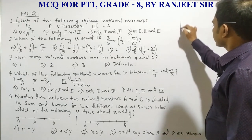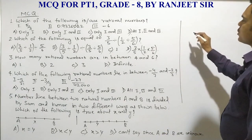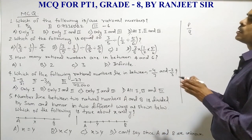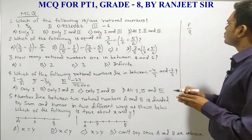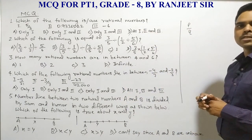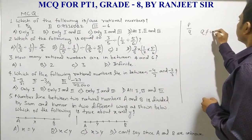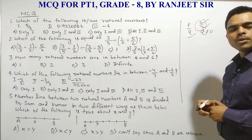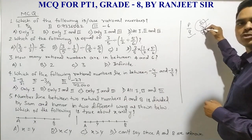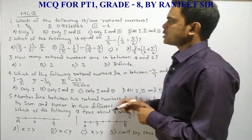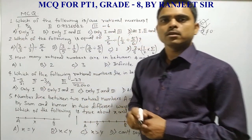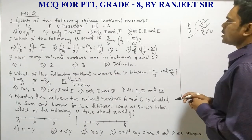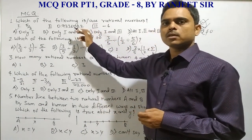The definition says P/Q form — 5/3 is in that form, and this Q should not be equal to 0. So 5/3 is in the form of P/Q and the denominator is not equal to 0, meaning the first number satisfies the definition of rational numbers.